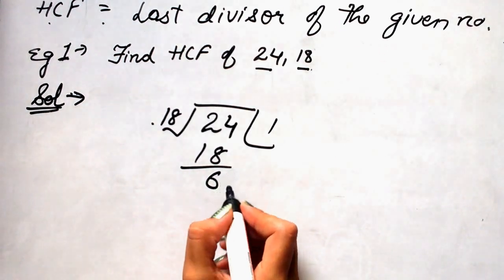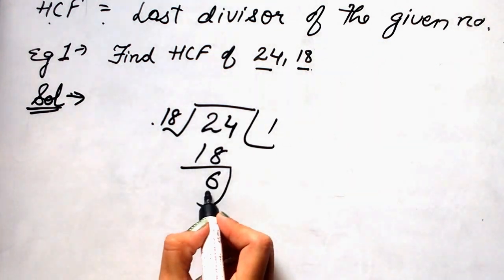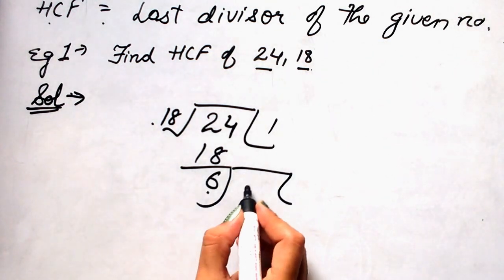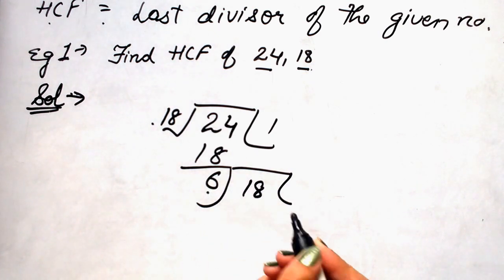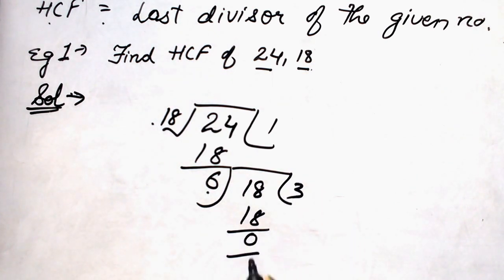Now, to proceed again, we have to divide 18 by the remainder. So, 18 divided by 6 and here we get 0 as remainder.